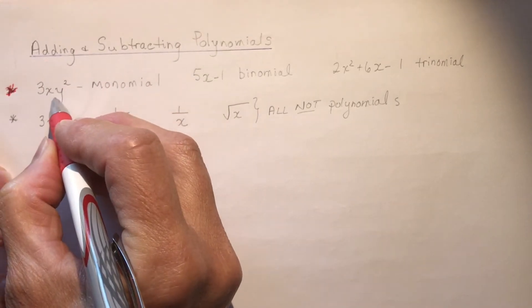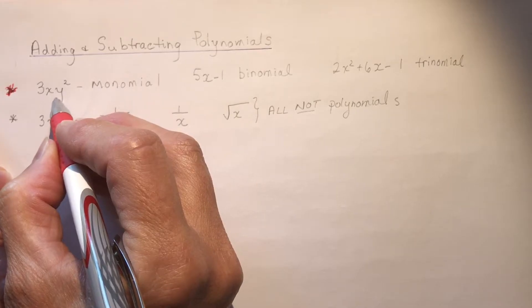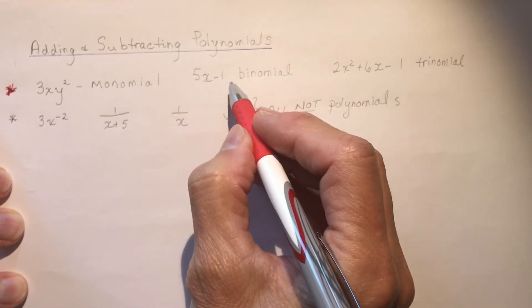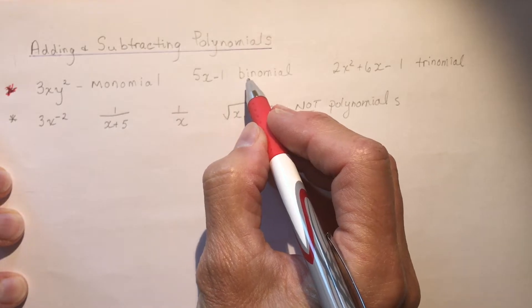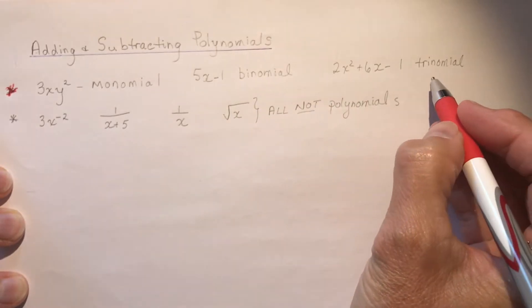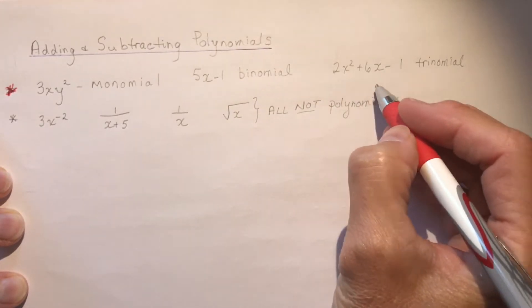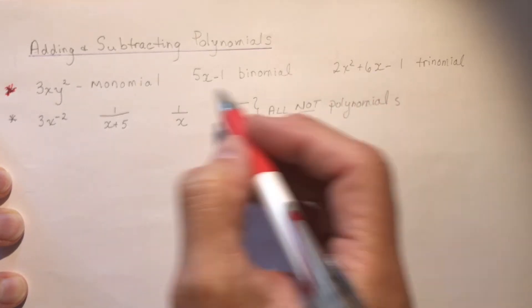Monomial, one term, just like a monocycle. A binomial has two terms, so that makes it like a bicycle. And a trinomial, three terms like a tricycle, right? So easy to remember.